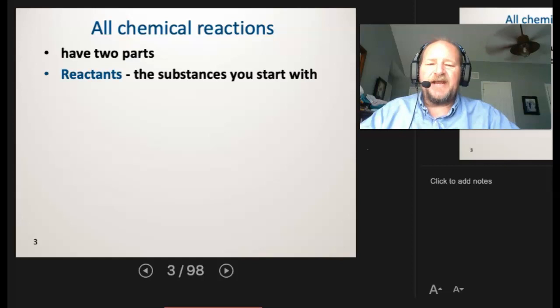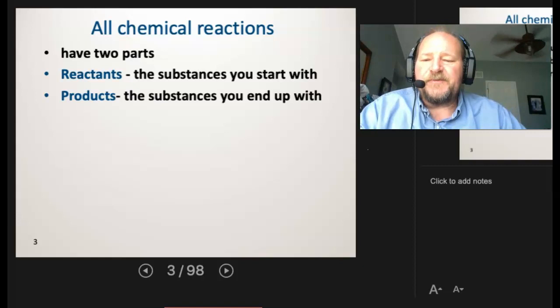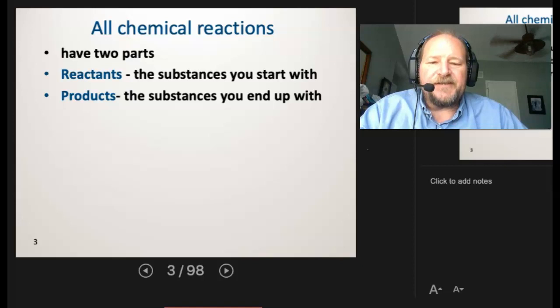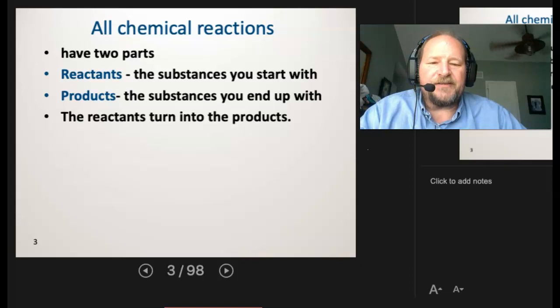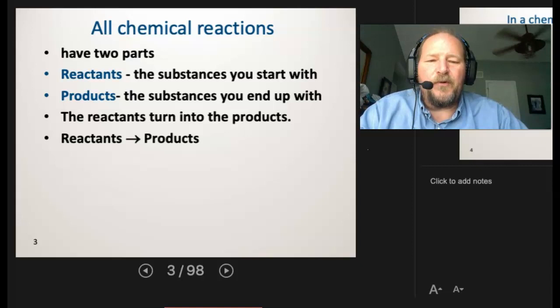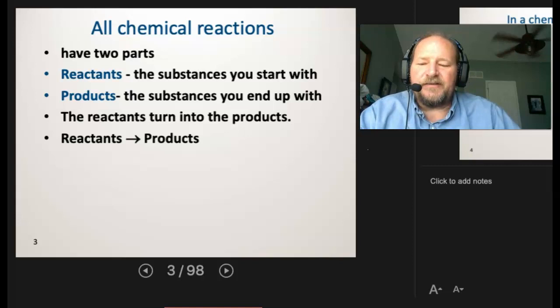All right. So all chemical reactions have two parts. In the beginning, we have the reactants. These are the substances that we're going to start with. And then we'll finish with the products. And those are the substances we're going to end up with. In essence, there's lots of different ways I could say it. But basically, the reactants are going to turn into the products. Now, even though all of our chemical reactions start with a sentence, the ending will look more like this, where we're going to have some chemical compounds with an arrow pointing towards the products. Now, the arrow will always point towards the products.